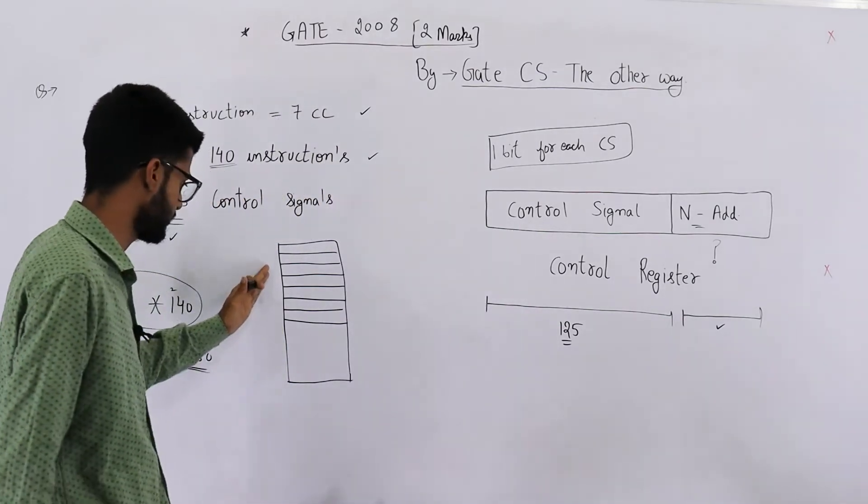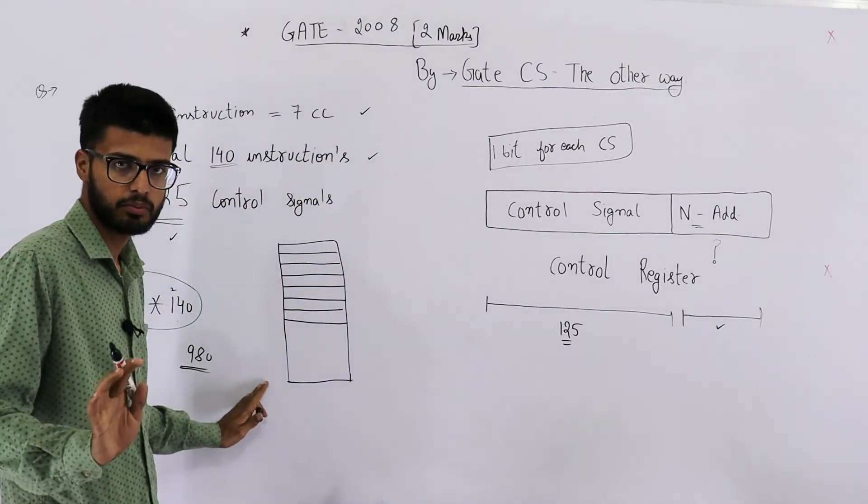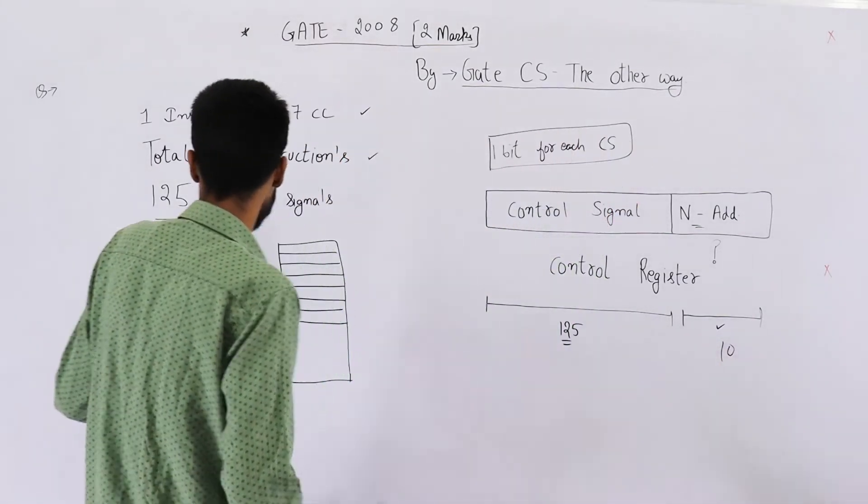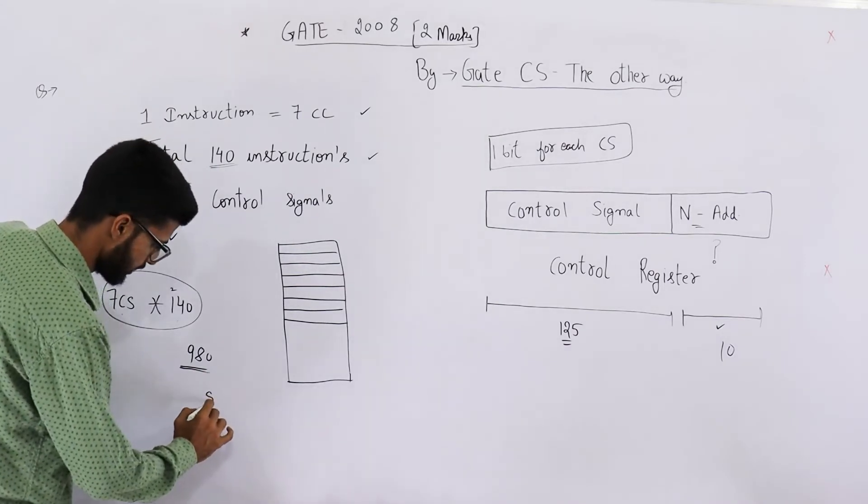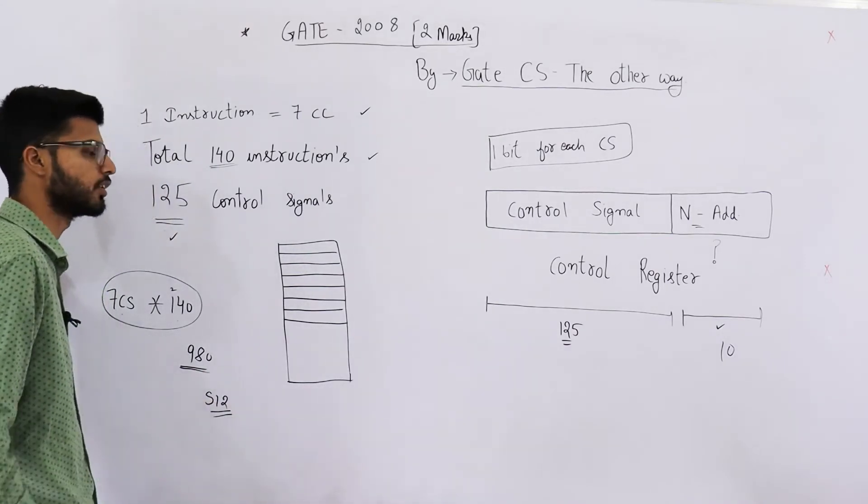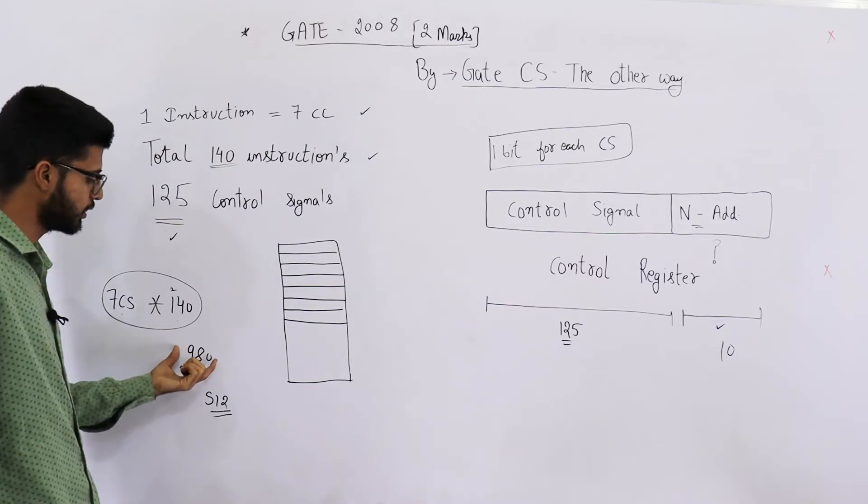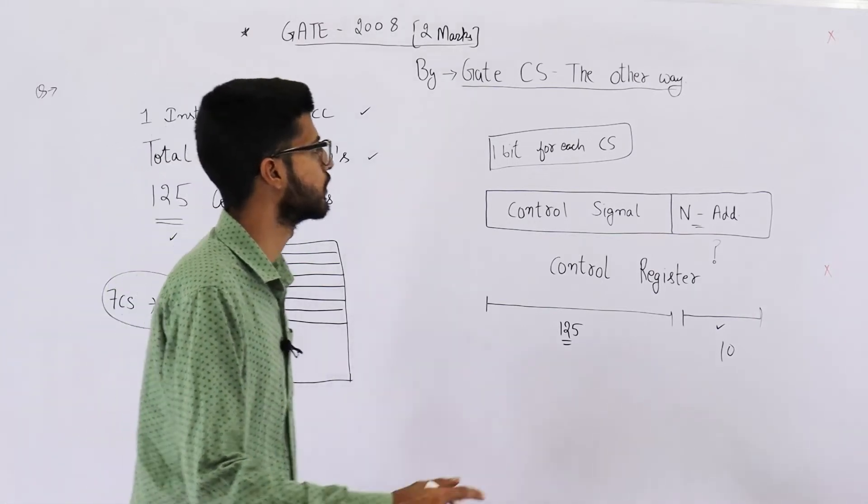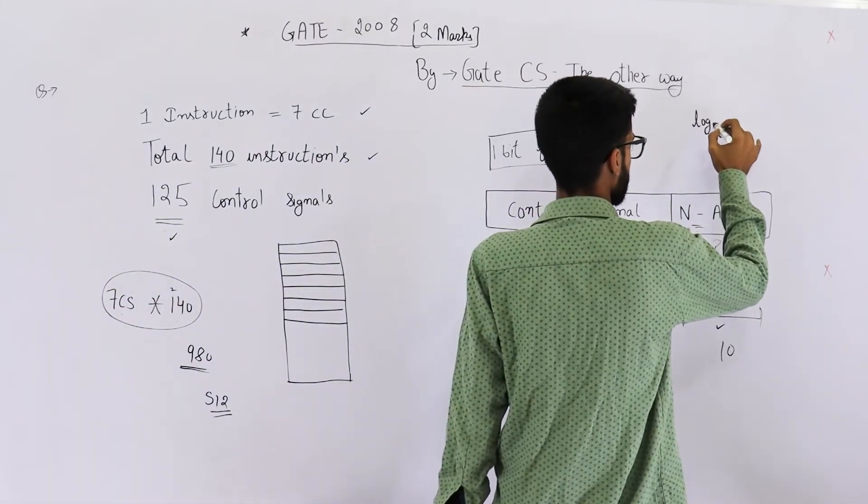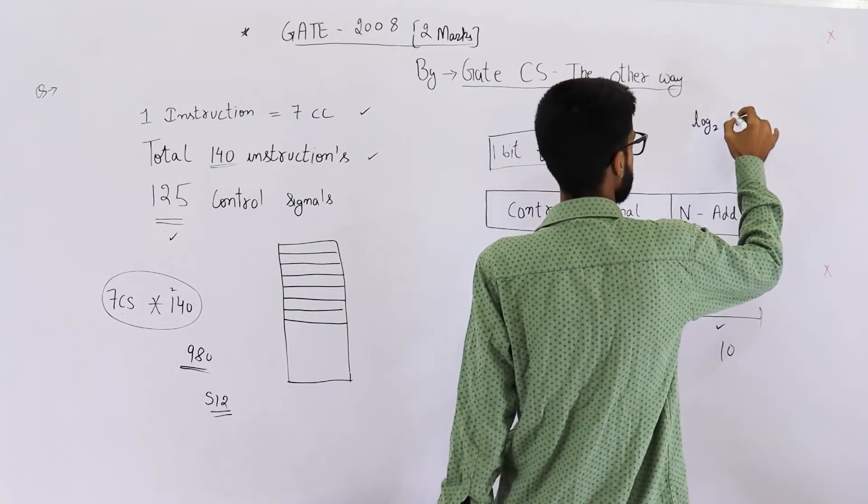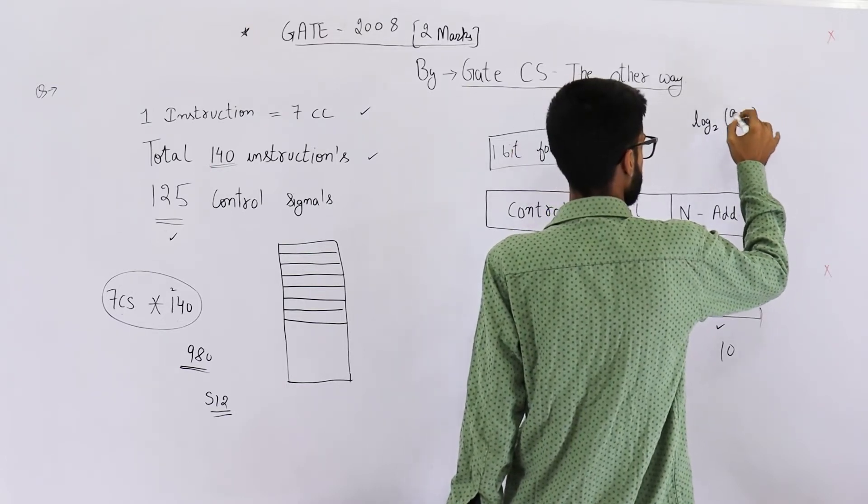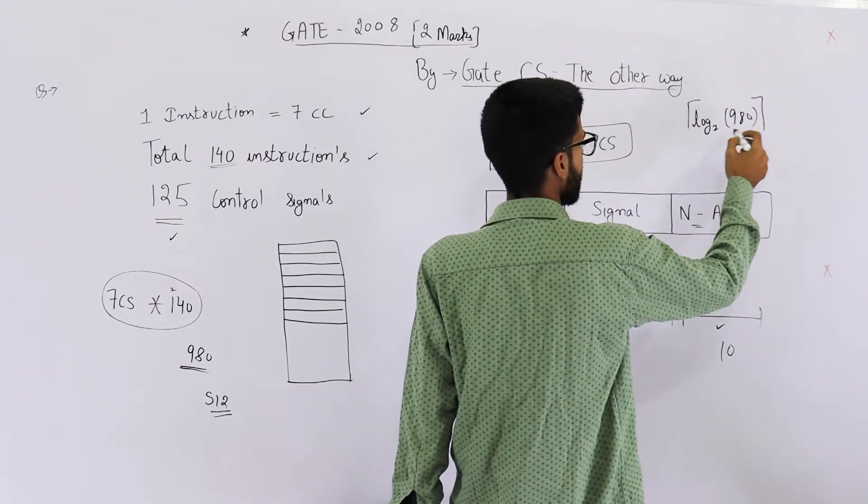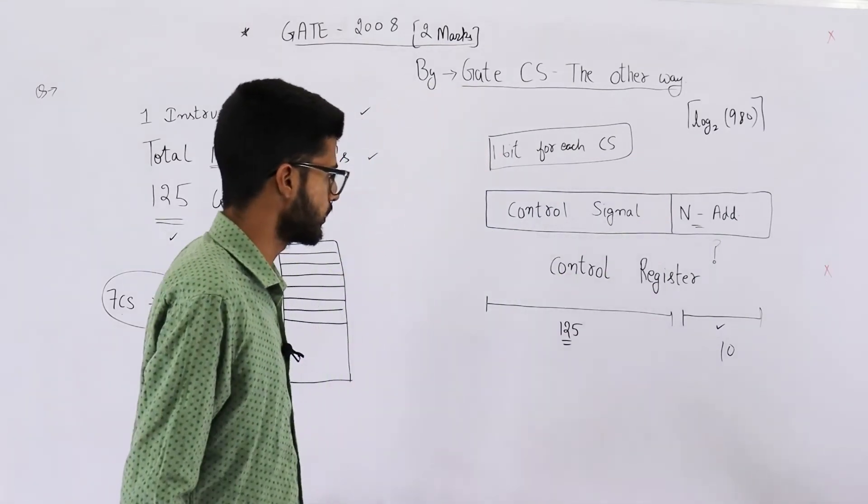Now 980 addresses means a 10 bit value. How am I saying that it is 10 bit? Because with 9 bits we can address only 512 instructions or micro instructions. But we need to address 980, so 10 bits will do the job. Anyways, you can take log to the base 2 of 980 and its ceiling value. So this value will be 9 point something and you take its ceiling, you'll get 10.